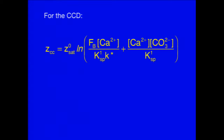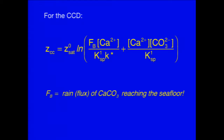The CCD is a little more complicated. It has that same term reflecting the effects of where dissolution starts, and then it has another term. There's the rate constant — the apparent rate constant for dissolution of calcium carbonate on the seafloor. And there is the important term: the rain of calcite to the bottom. The rain of calcite to the bottom is proportional, in some way, to the calcification rate. This is the link back between geology and biology.